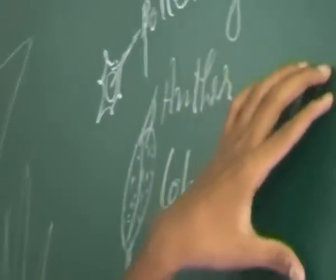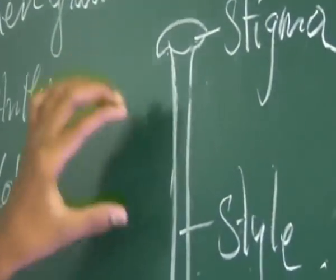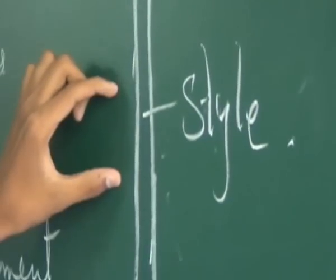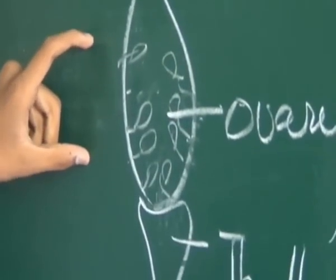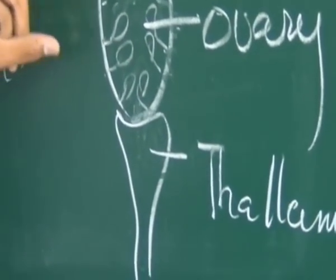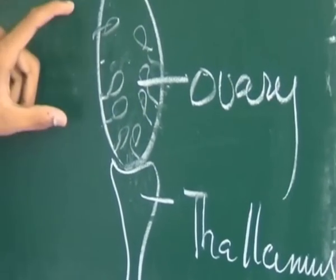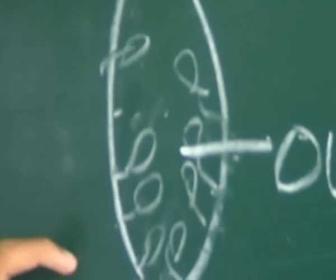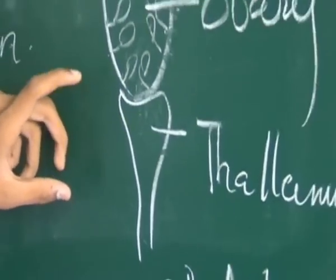Now let us see the female reproductive part of the flower. It has three parts. The head portion is called Stigma, and the stalk is called Style. The ovary is situated on the Thalamus. Ovules are present in the ovary and they are future seeds. Thalamus is the cushion-type structure.